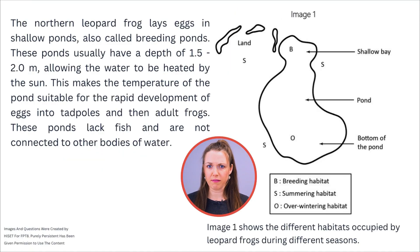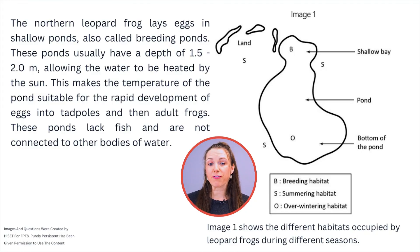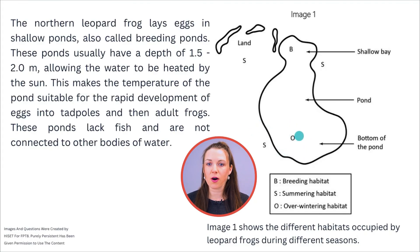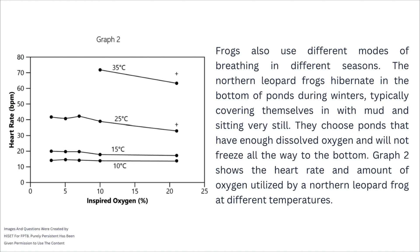Here we have a map showing Image 1, which shows the different habitats occupied by leopard frogs during different seasons. 'B' is the breeding habitat, 'S' is the summering habitat on land, and 'O' at the bottom of the pond is the overwintering habitat. We also have another chart showing inspired oxygen and heart rate, which remains about the same based on temperature.